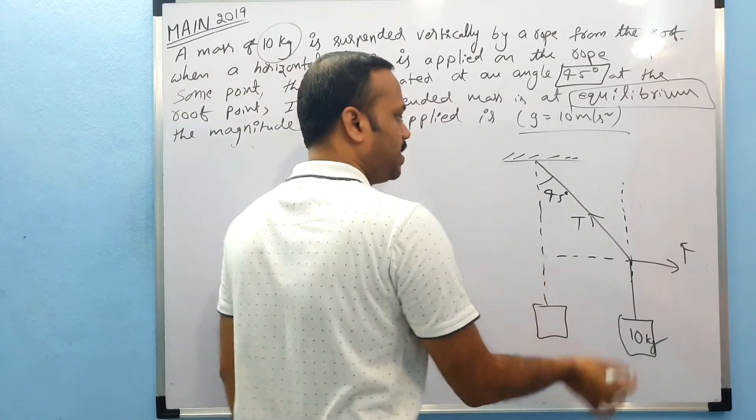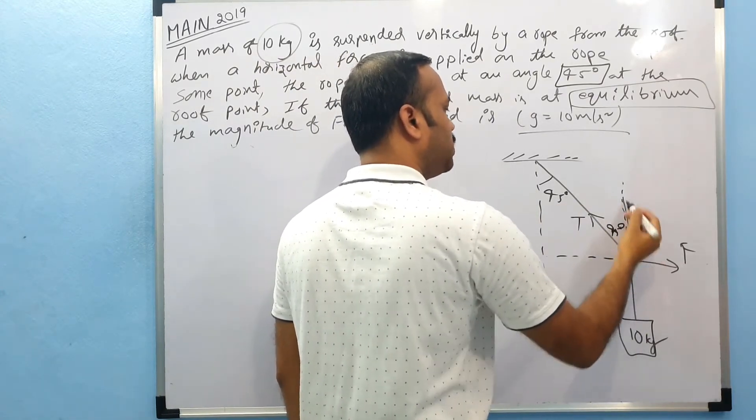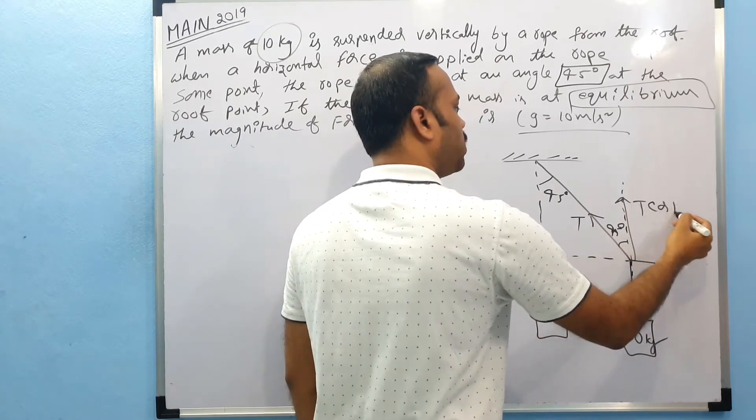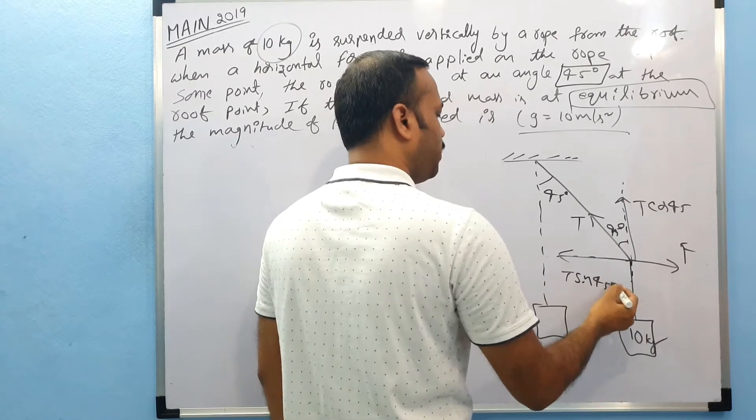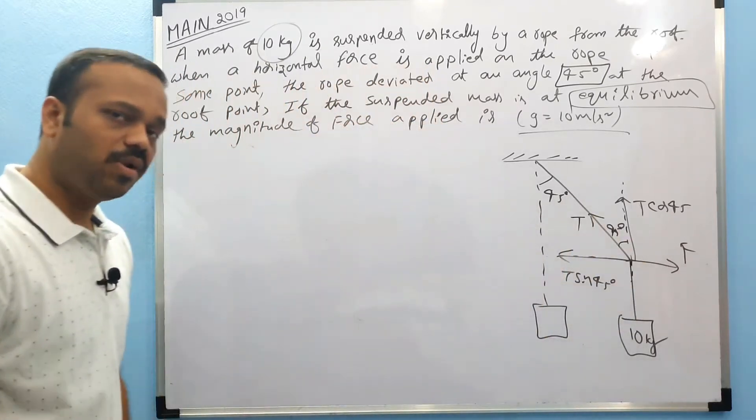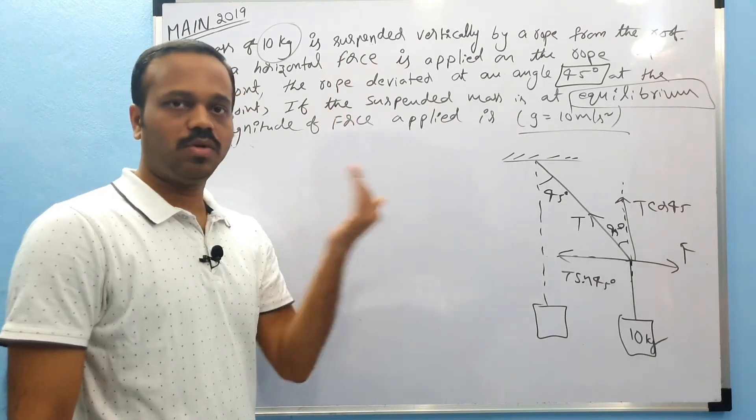This is X axis and this is Y axis. If this is 45 here, it is also 45 there. So this side we have T cos 45, this side we have T sine 45. If the body is in equilibrium, all forces must be balanced - upward force equals downward force, right force equals leftward force.